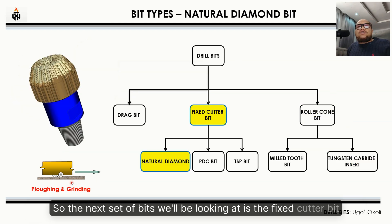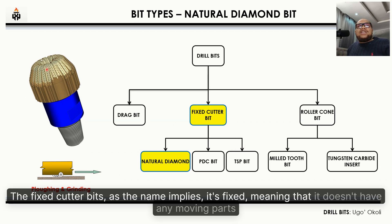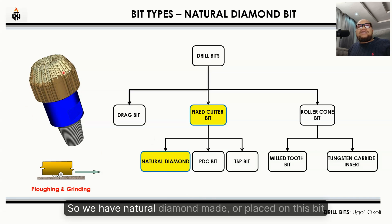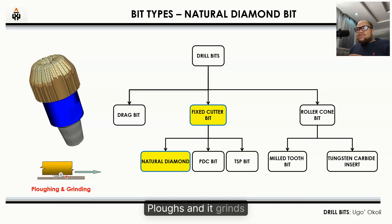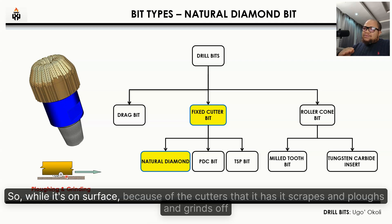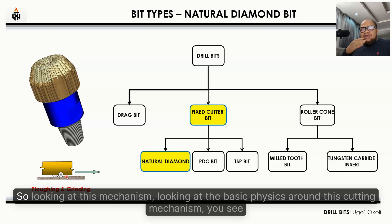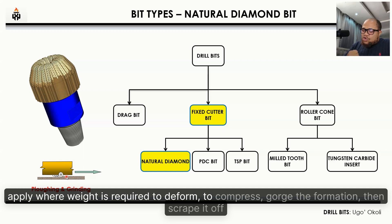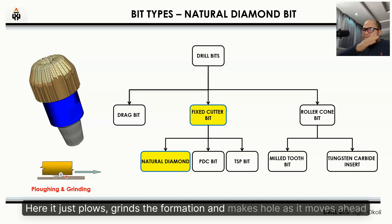The next set of bits is the fixed cutter bit. As the name implies, it's fixed — no moving parts. The first group is the natural diamond bit: natural diamonds are placed on this bit. How it drills — it plows and grinds. While on bottom, because of the cutters it has, it scrapes, plows, and grinds off the formation. You don't actually need as much weight as with the roller cone bits — it just plows and grinds the formation and makes hole.